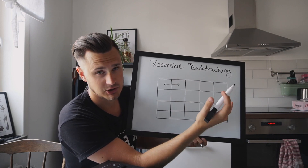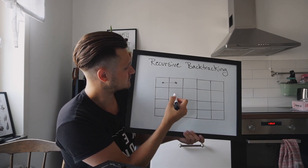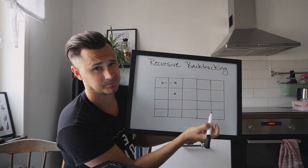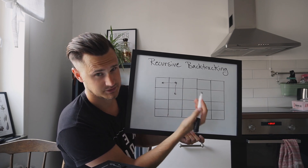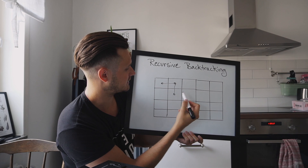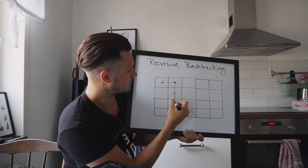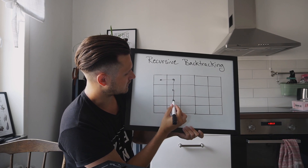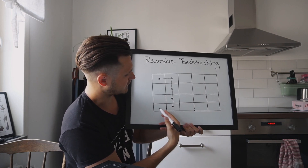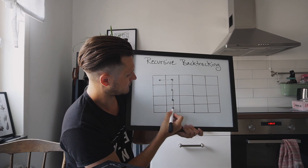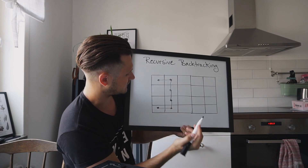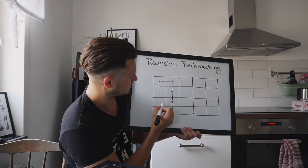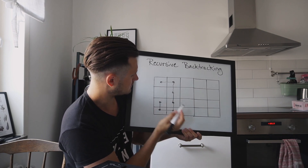From that cell we'll do the same thing — we'll find a neighbor that we haven't visited yet, so either this cell or that cell. Say we go down here. On this cell we'll do the same thing, so we can go here, here, or here. Say we continue down at random. We come down here. We can go either here or here. Say we move to the left here. And the only way we can move from here is up. And same thing here.